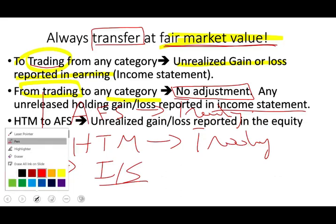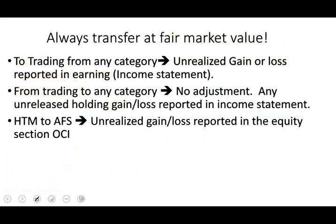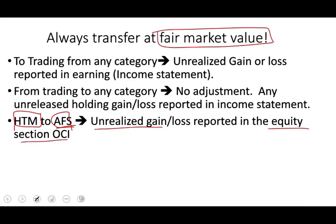What happens if we go from held to maturity to available for sale? Held to maturity reports debt securities at amortized cost, meaning there is no gain or loss on the books. Now moving to available for sale, it gets reported at fair market value, and any unrealized holding gain or loss is reported in equity — in other comprehensive income — for the available for sale category.